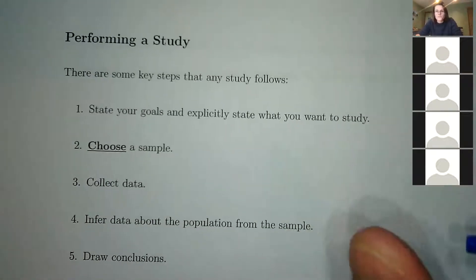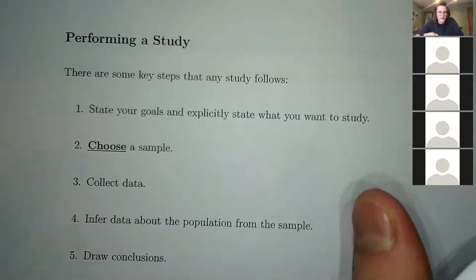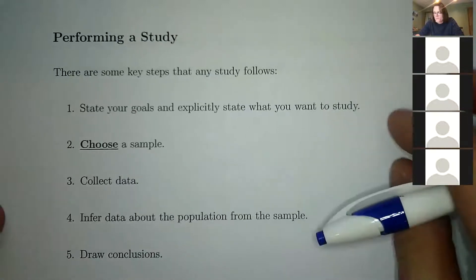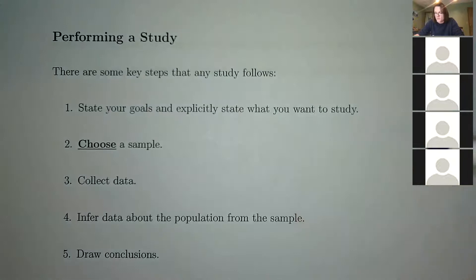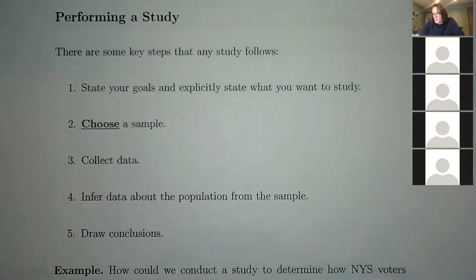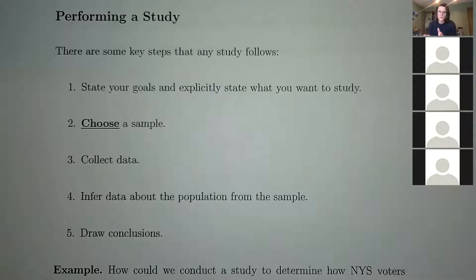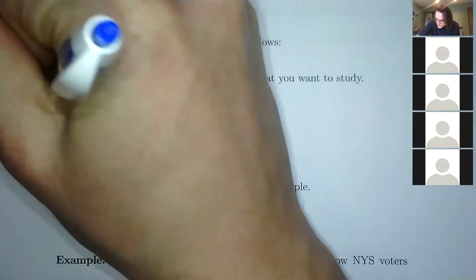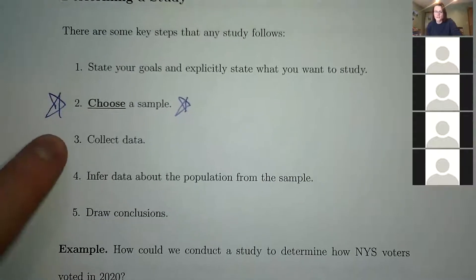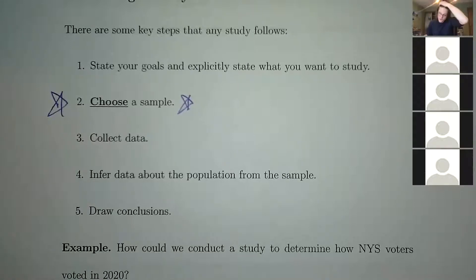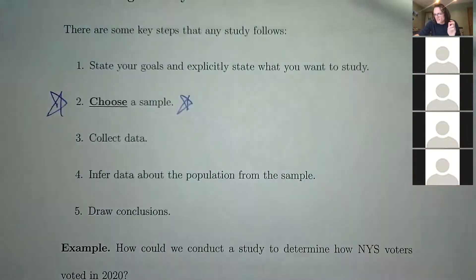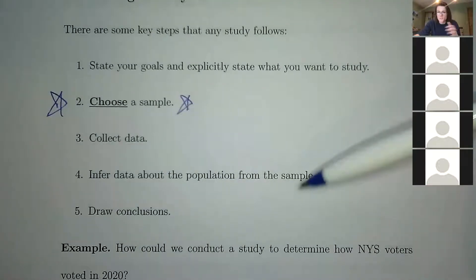To review: population, sample, parameter, and statistics are all important definitions. Now let's walk through the key steps for conducting a study. First, state your goals — explicitly state what you want to study, like voter election preferences. Then, choose a sample — this is wildly vital. Then collect your data. These steps are extremely important, especially choosing a good sample.